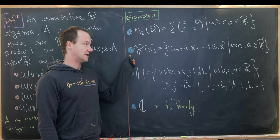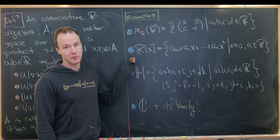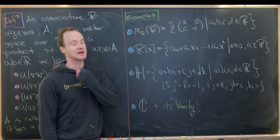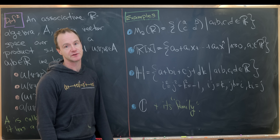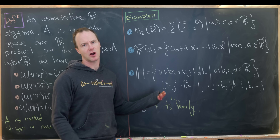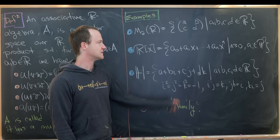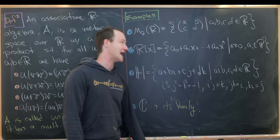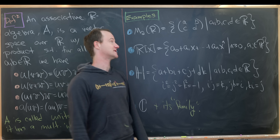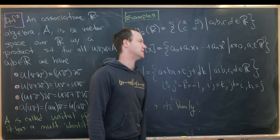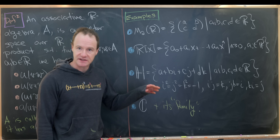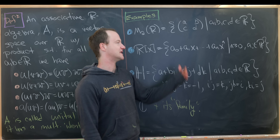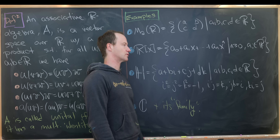Another nice example is the polynomial algebra. I'll write this as R adjoined X — that's going to be all polynomials with coefficients in R in the indeterminate X. We could write that as A₀ + A₁X all the way up to AₙXⁿ, for N greater than or equal to zero. If N equals zero we get constants, and those Aᵢ are real numbers.